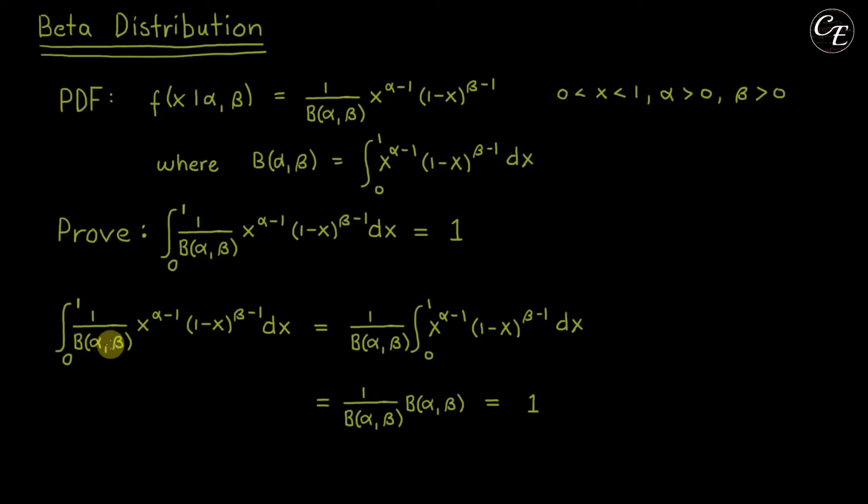Now this beta function which is this one is a constant so this 1 over beta function can be moved out from the integral. So we have this one from here.